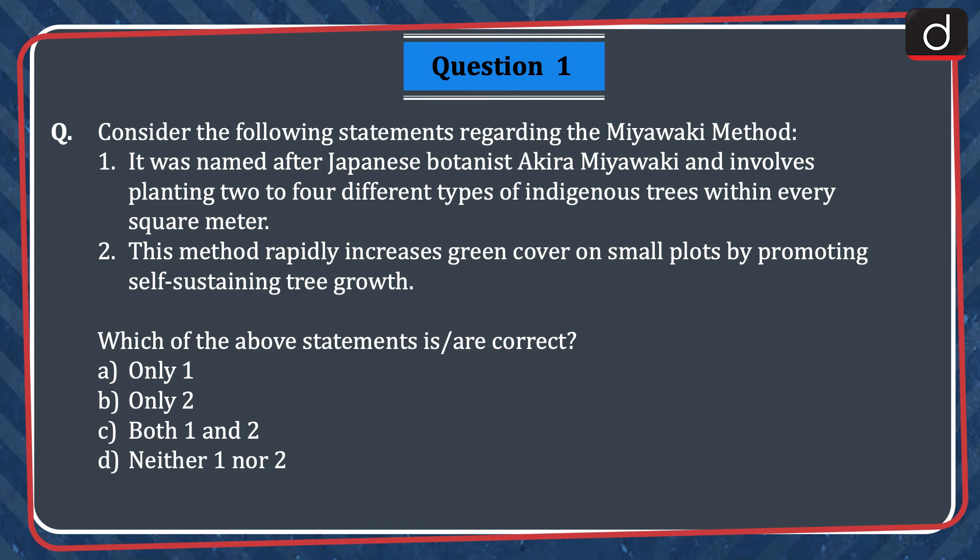First question: consider the following statements regarding the Miyawaki method. 1. It was named after Japanese botanist Akira Miyawaki and involves planting 2 to 4 different types of indigenous trees within every square meter. 2. This method rapidly increases green cover on small plots by promoting self-sustaining tree growth. Which of the above statements is or are correct? Only 1, only 2, both 1 and 2, or neither 1 nor 2? The correct answer is option C, both 1 and 2.